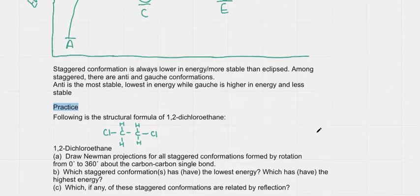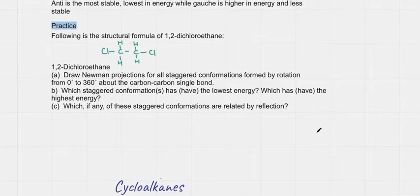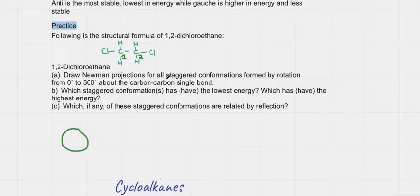Now let's practice the following problem. It says: the following is the structural formula of 1,2-dichloroethane. Draw Newman projections for all staggered conformations formed by rotation from 0 to 360 degrees about the carbon-carbon single bond. Which staggered conformation has the lowest energy? Which has the highest? And which staggered conformations are related by reflection? I'll number this carbon one and carbon two and draw the conformations — staggered, so groups as far apart as possible.